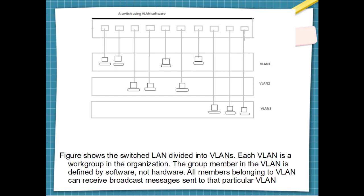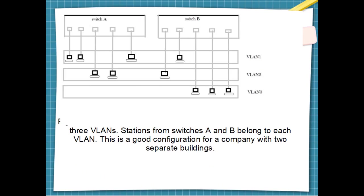The figure shows a backbone logical area network with two switches and three VLANs. There are two switches, switch A and switch B. VLAN one, VLAN two, and VLAN three are the same as seen in the previous figure. This is a good configuration for a company to separate two buildings, where the same switch is separated into switch A and switch B. Each building can have its own switch LAN connected to a backbone.